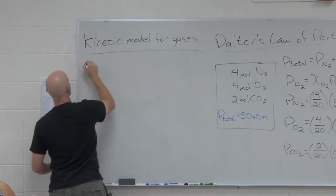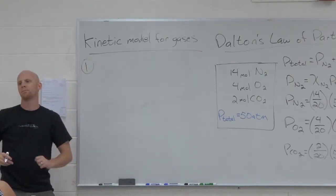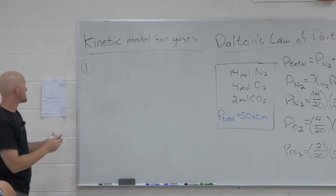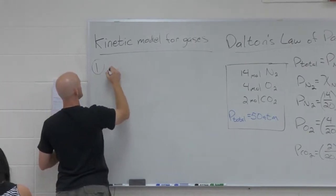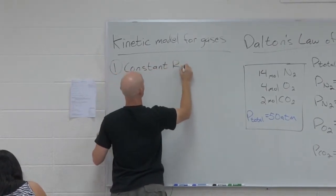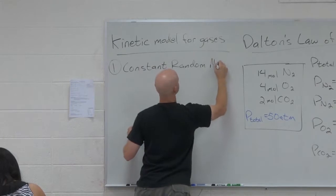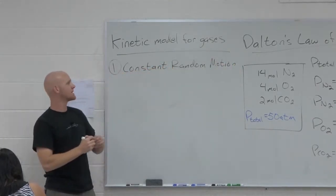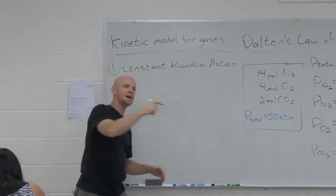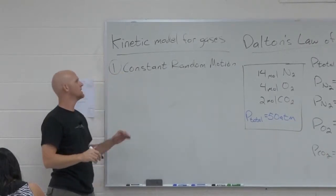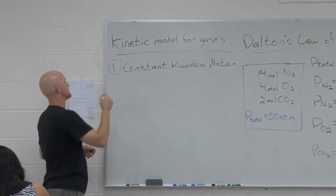This kinetic model for gases really has three big assumptions. They're on your handout there. The first one is just that gas molecules are in constant random motion. Sometimes you'll see other sources explain this out a little further and say it's straight line motion until they collide with something - either the wall of the container, another molecule, whatever. But constant random motion.